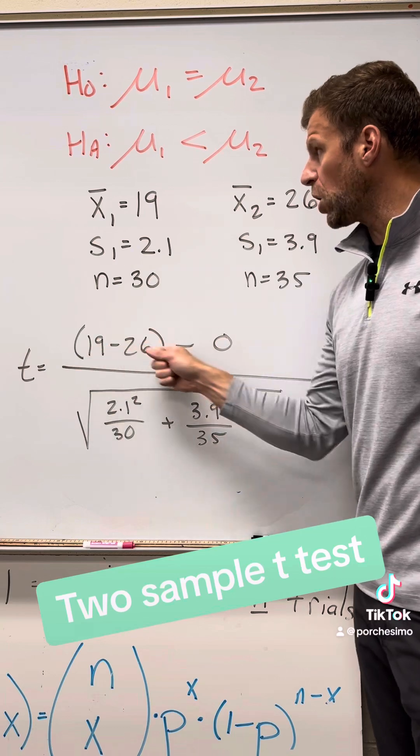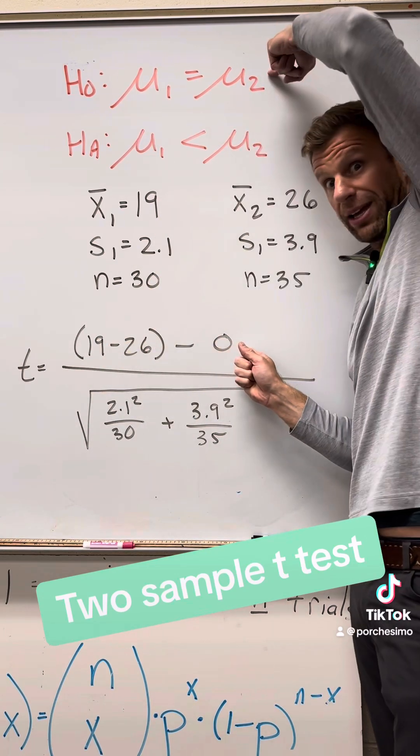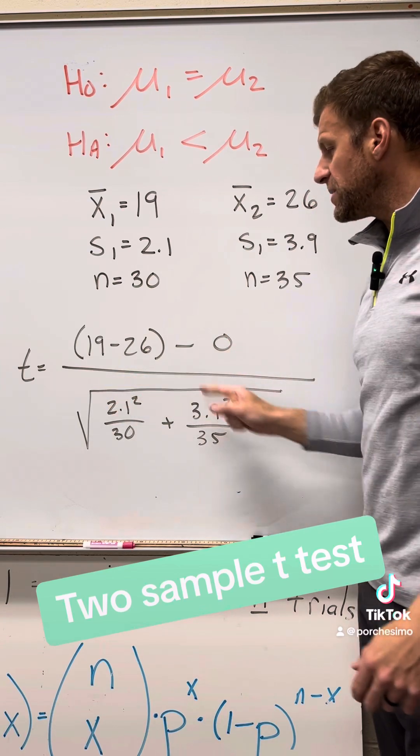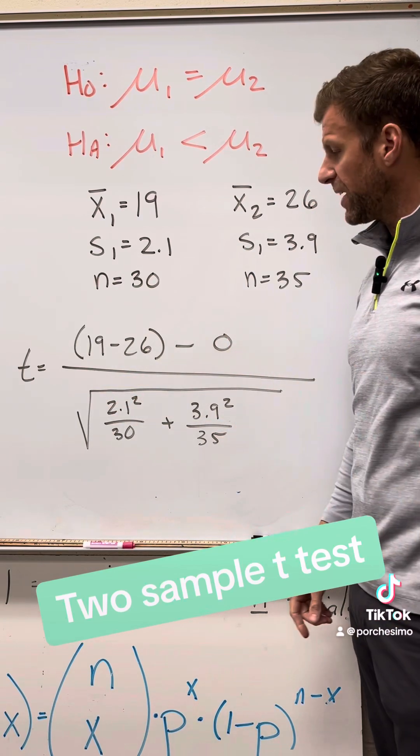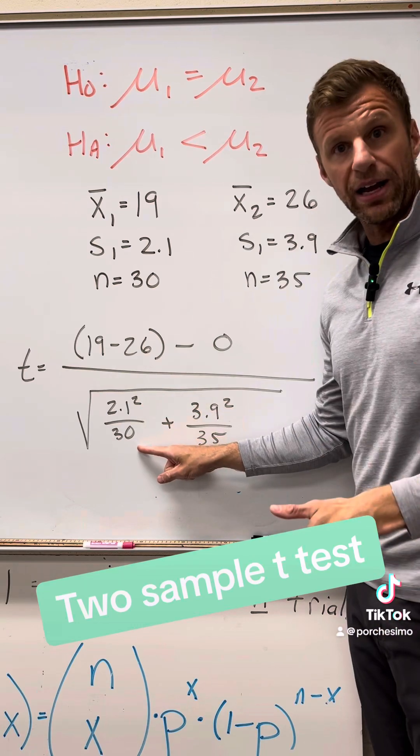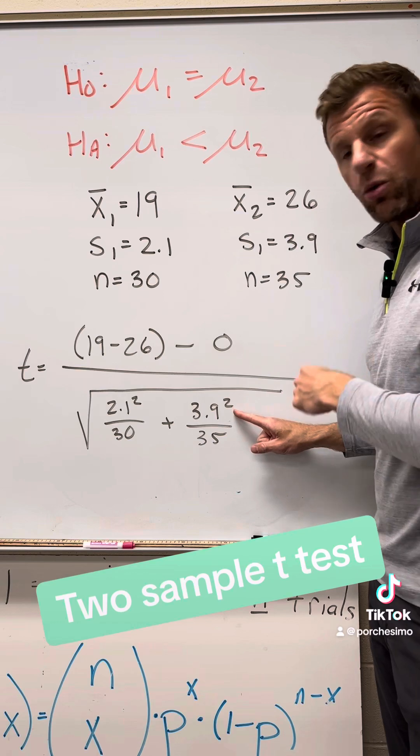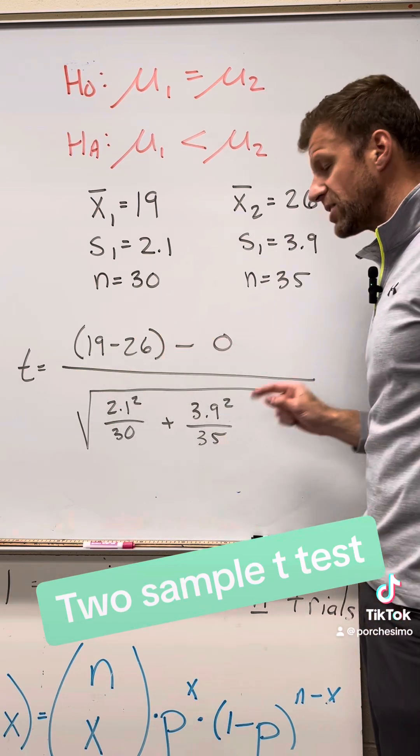We're taking the observed difference that we saw between our samples, minus zero, because again we assume there's no difference, and then we divide by the standard error. The standard error formula here is taking the standard deviation from sample one squared divided by sample size, the standard deviation for sample two squared divided by sample size, giant square root around all of that.